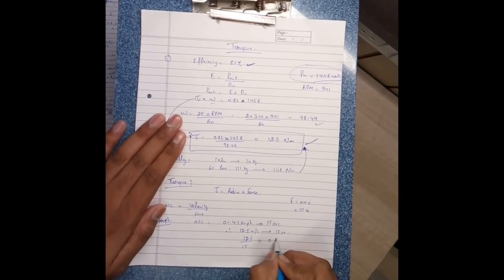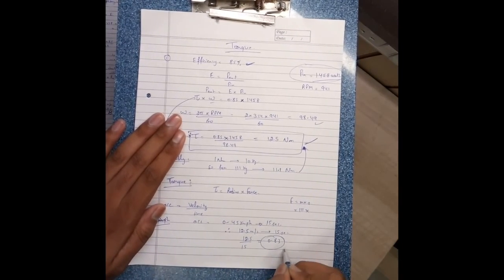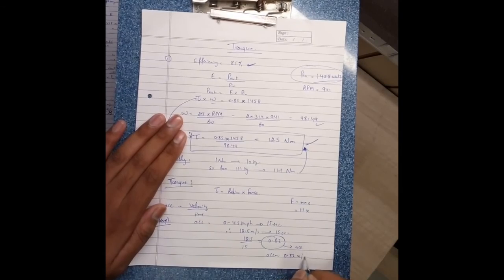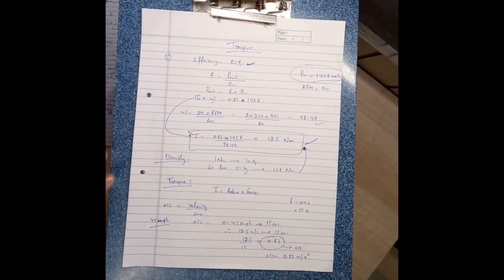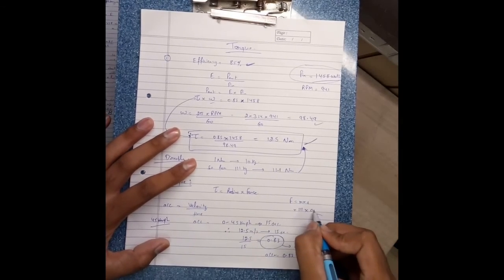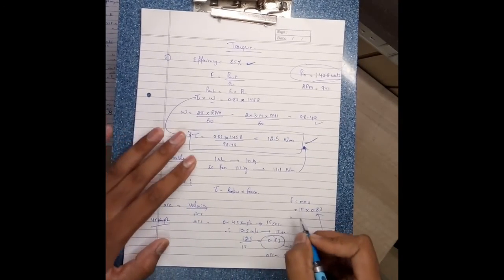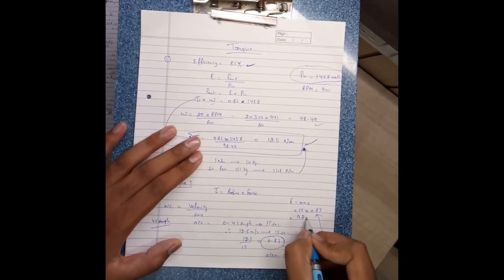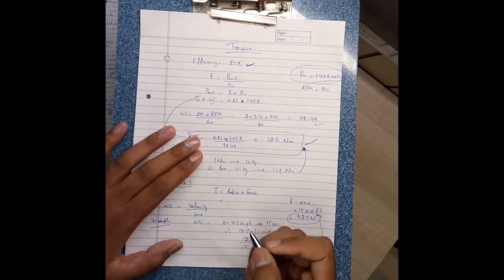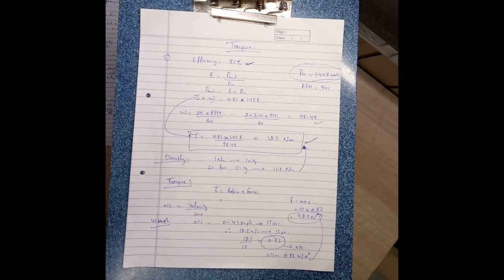The acceleration equals 0.83 meters per second squared. Using this value, force equals mass times acceleration: 111 times 0.83 equals 92.5 Newtons. This is the force.